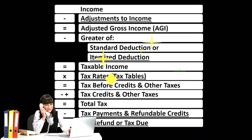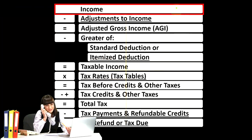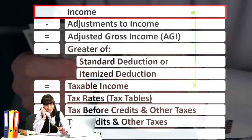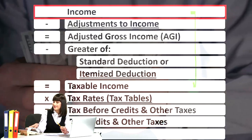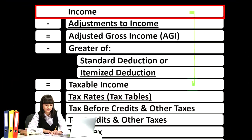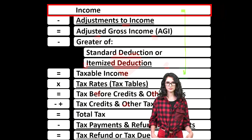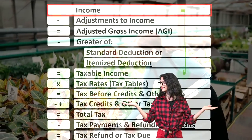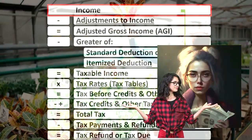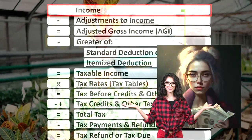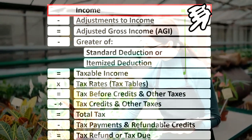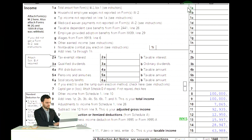Looking at the income tax formula, we're focused on line one income. The first half of the income tax formula is in essence an income statement — just an outline, the scaffolding, with other forms and schedules flowing into it. For example, the Schedule C, the business income, which has its own income statement. In essence, income minus expenses or business deductions getting to the net income flows into line one of our income tax formula. This is the first page of Form 1040.